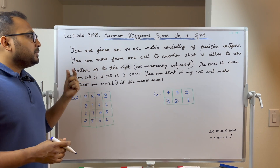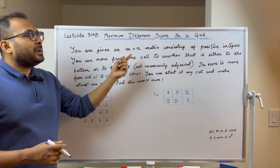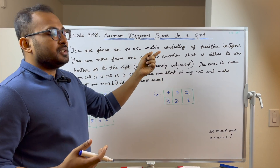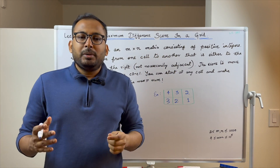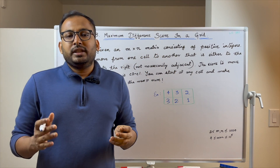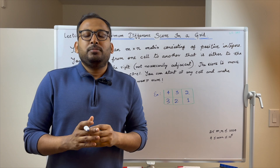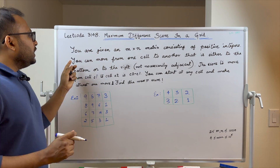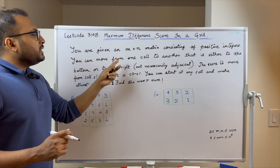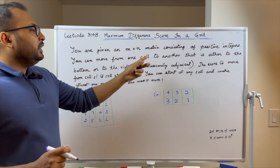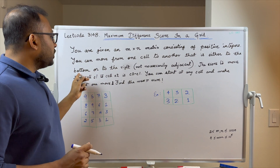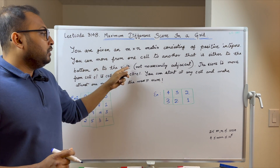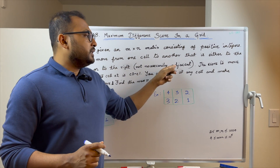In this problem you are given an m×n matrix consisting of positive integers. You can move from one cell to another that is either to the bottom or to the right, not necessarily adjacent.